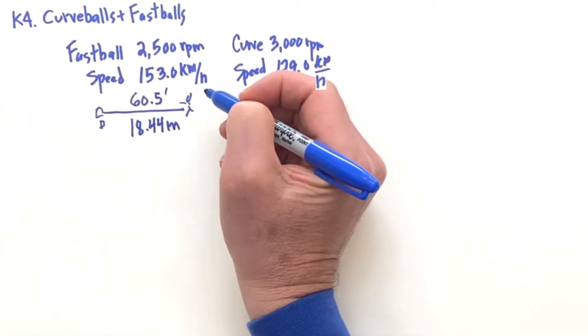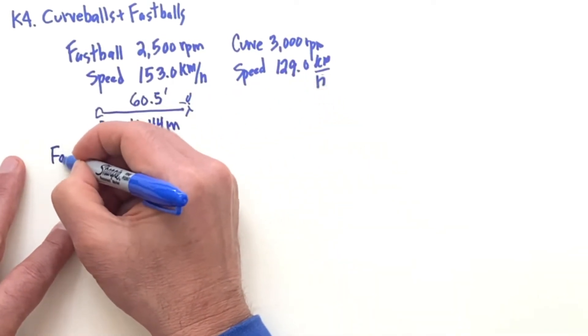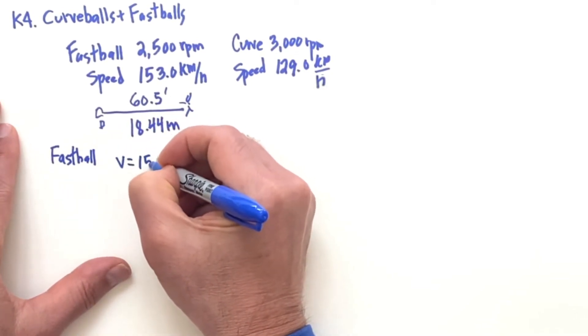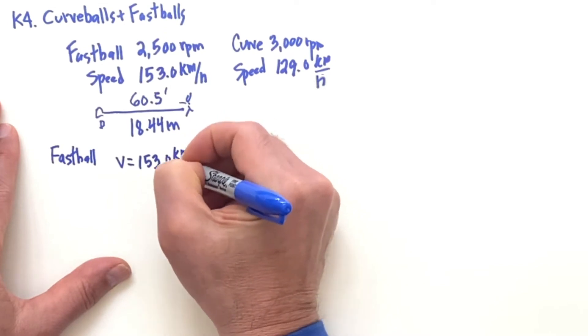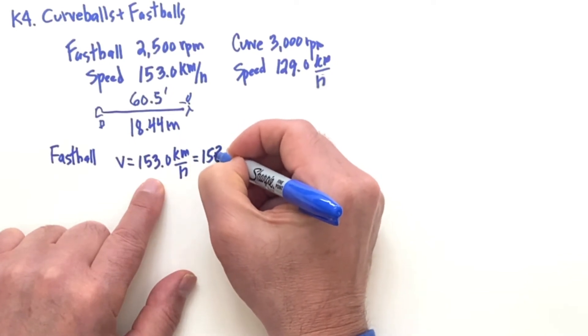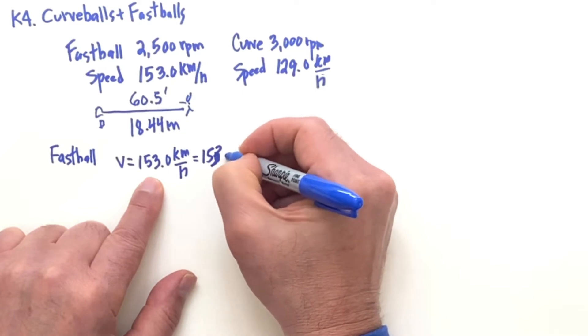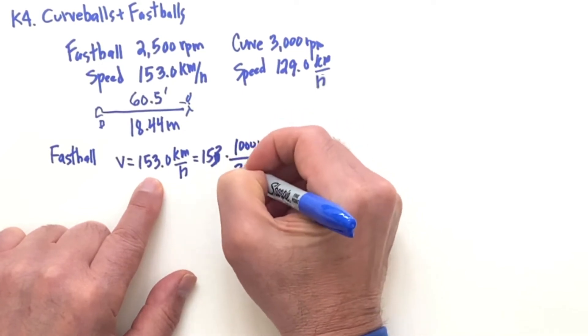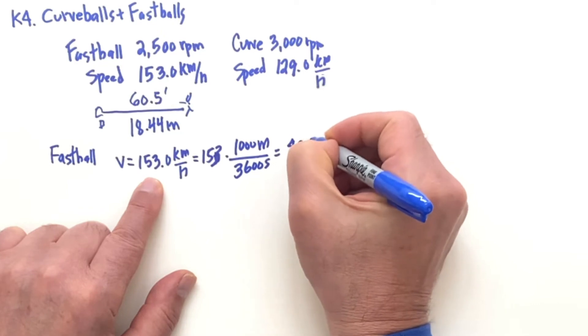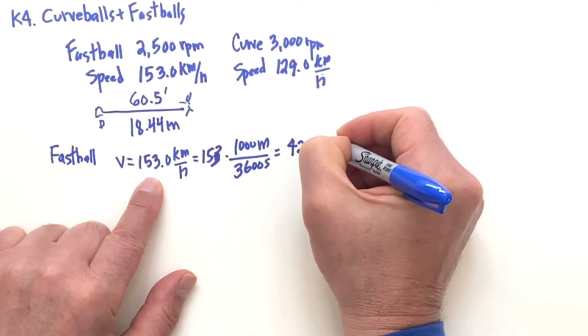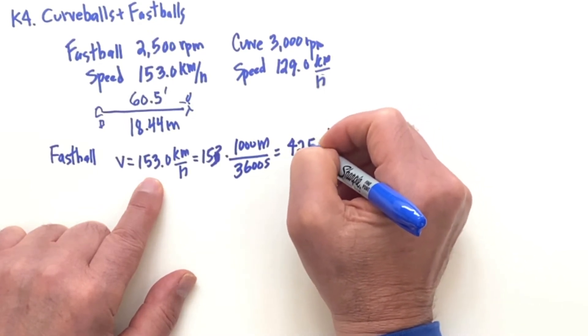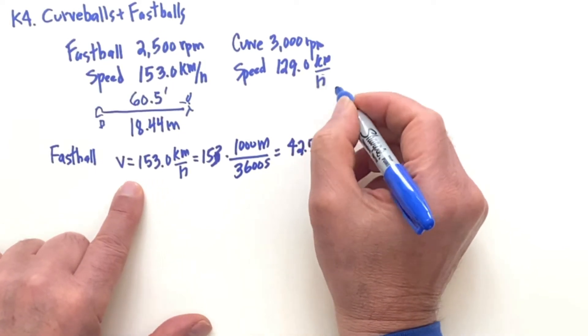So let's do it. And we'll do fastballs first. For the fastball we have the velocity is 153.0 kilometers per hour and I would like to work in meters per second. So this is 153, 153 times 1000 meters over 3600 seconds, and that comes out to be 42.500 meters per second.